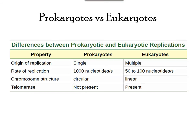In this chart, we can see the differences between prokaryotic and eukaryotic replication. Prokaryotic cells have a single origin of replication, while eukaryotes have multiple. The rate of replication also differs between the two. Prokaryotes have a circular chromosome structure, while eukaryotes have a linear chromosome. Lastly, telomeres are only present in eukaryotic cells.